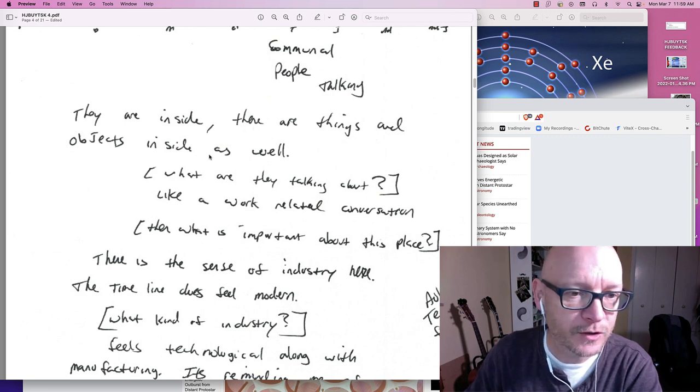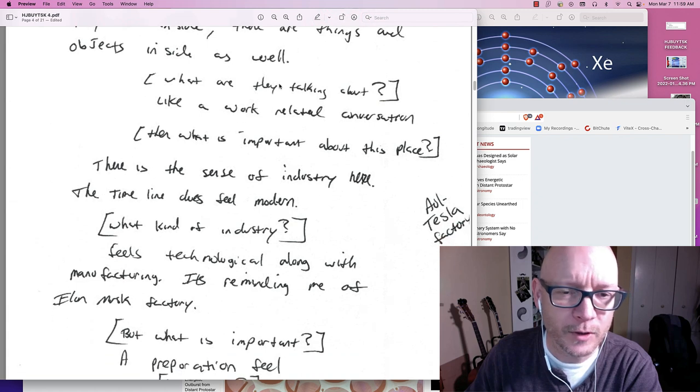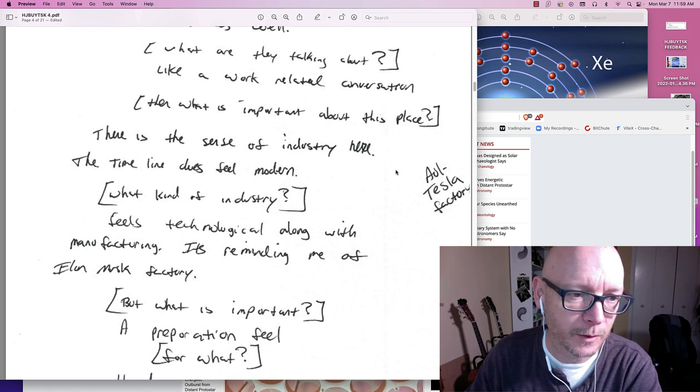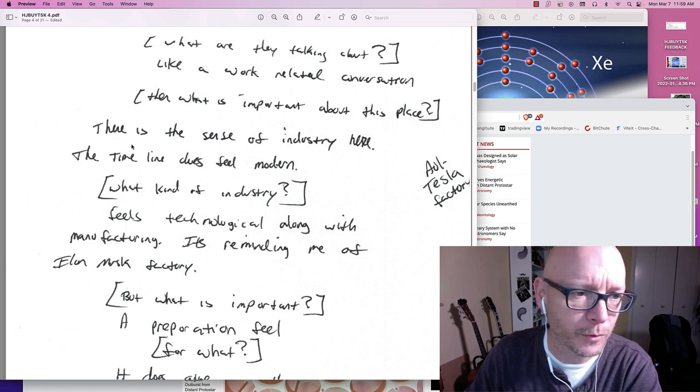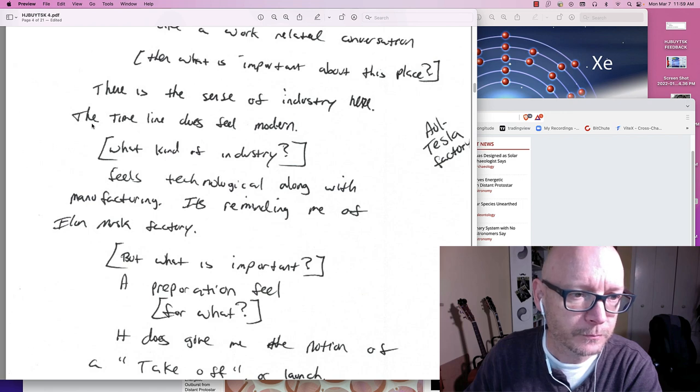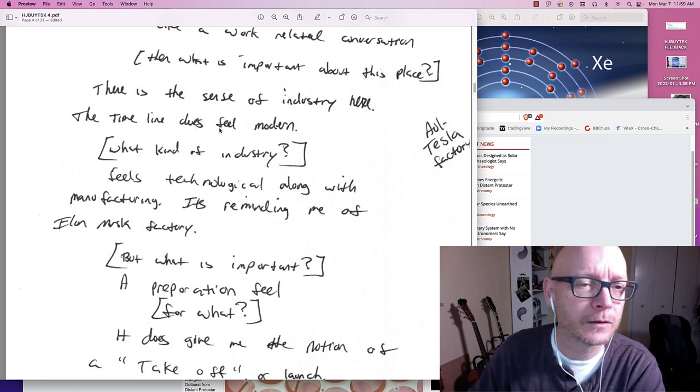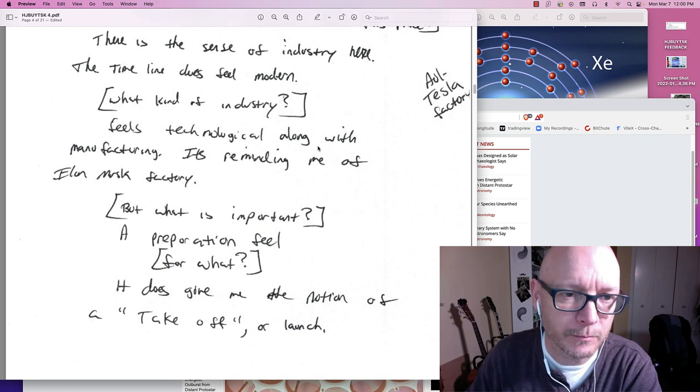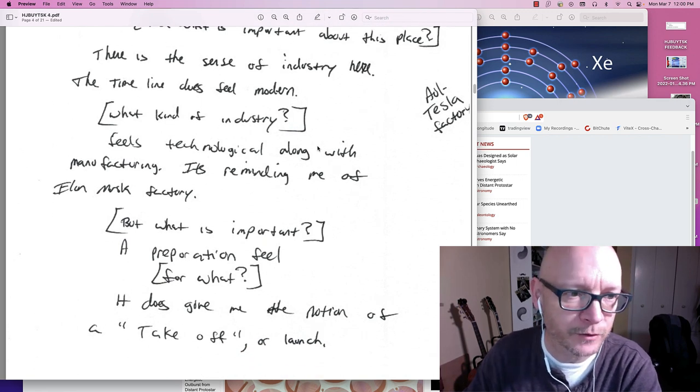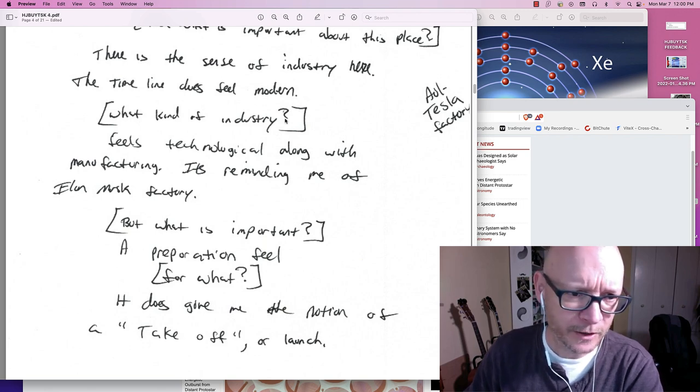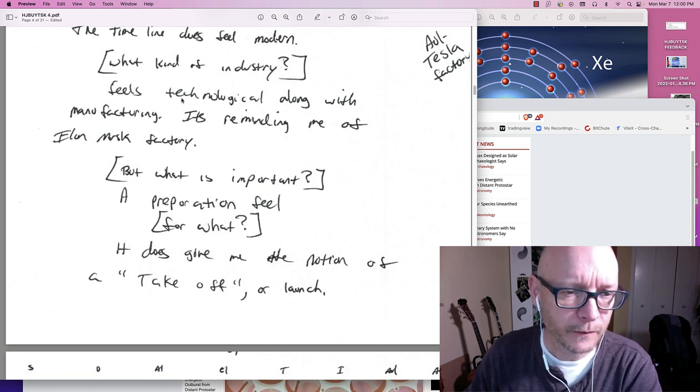So I'm inside of a workplace. It feels communal. The people, they're talking, they're inside. There are things and objects inside as well. But what are they talking about though, I wonder? Like a work-related conversation. And what is important about this place, I wonder? If it's a workplace, what's important? What kind of work? There is a sense of industry here. The timeline does feel modern. So I felt like I'm in the now, in the modern time. But what kind of industry is it, I wonder? It feels technological, along with manufacturing.